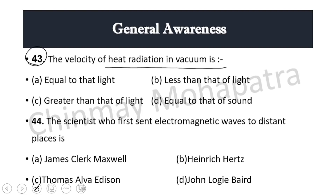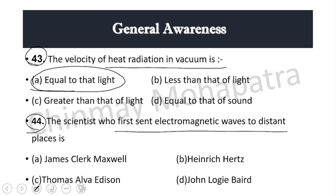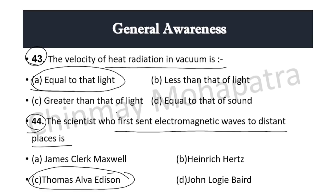Question 43: The velocity of heat radiation in vacuum is equal to that of light. Question 44: The scientist who first sent electromagnetic waves to distant places — right answer is Thomas Alva Edison.